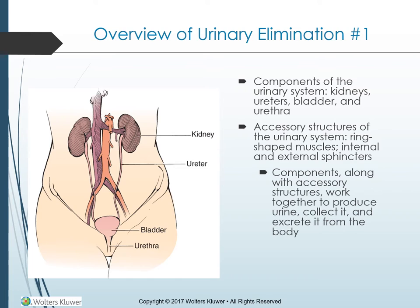Urinary elimination — the process of releasing excess fluid and metabolic waste, or urination — occurs when urine is excreted. Under normal conditions, the average person eliminates about 1,500 to 3,000 milliliters of urine each day. The consequences of impaired urinary elimination can be life-threatening. Urination takes place several times each day; the need to urinate becomes apparent when the bladder distends with approximately 150 to 300 milliliters of urine, stimulating stretch receptors in the bladder wall and creating a desire to empty it.